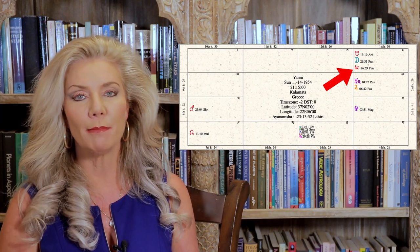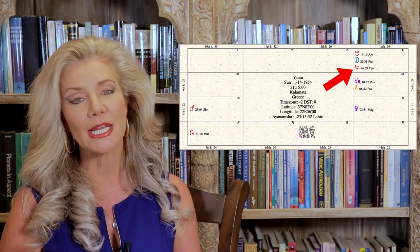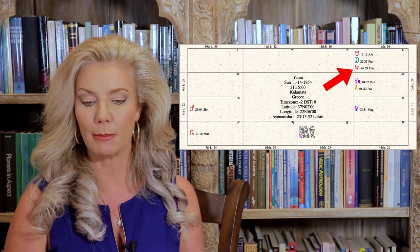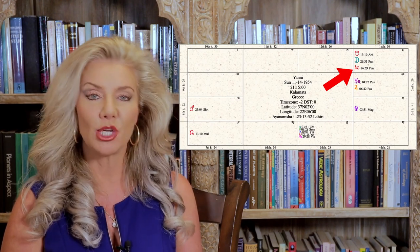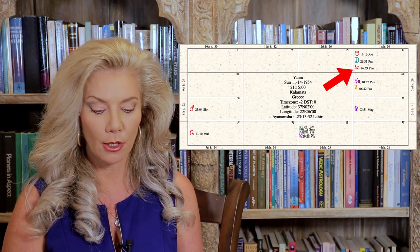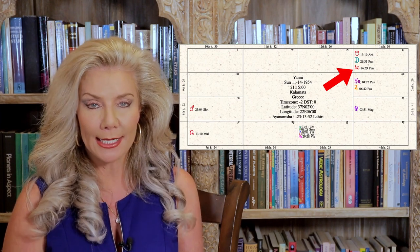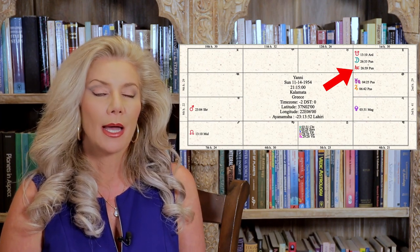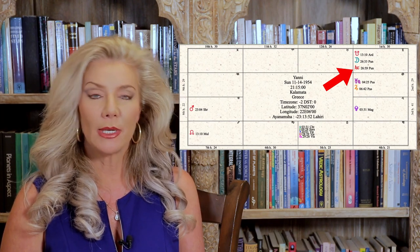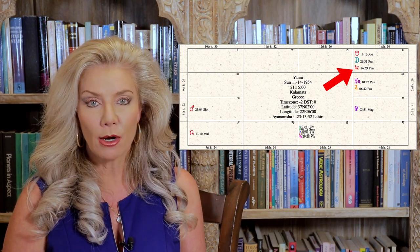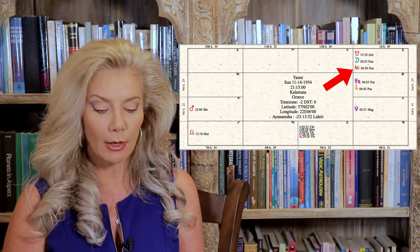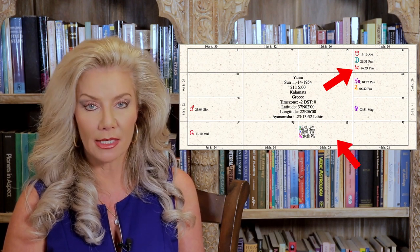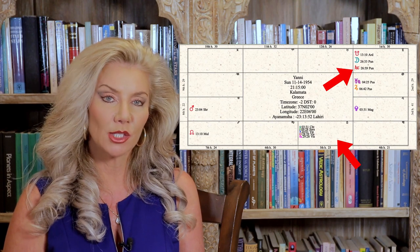Not to mention the moon being next to Ketu does make someone very deep, very profound, inward, intuitive. And in the sign of Gemini, he was a great communicator. All this air in his chart. A lot of air. Remember when music is pushing air. He was a musician. Very talented with Venus being in Libra with exalted Saturn.